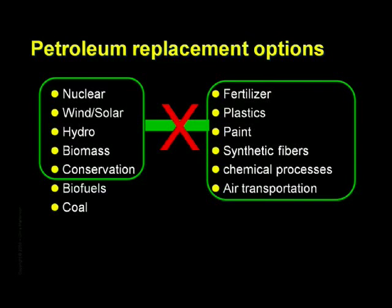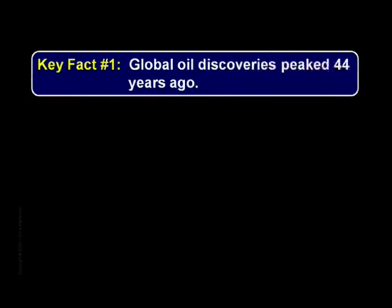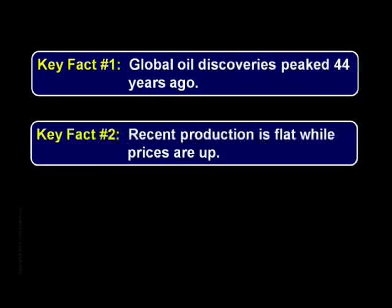Let's review a few key facts. You have to find oil before you can produce it. Key fact number one: world oil discoveries peaked in 1964. US discoveries peaked in 1930, and 40 years later, production peaked. We are now 44 years after the global discovery peak. Key fact number two: world production of conventional crude has been flat for the past four years, even as prices have increased by 140%. Taken together, key facts one and two suggest the possibility that peak oil is already upon us. If true, then we are going to wish with all our hearts that we had begun preparing for this moment a decade or more ago.